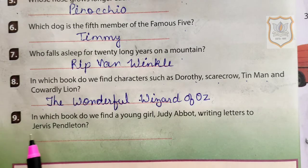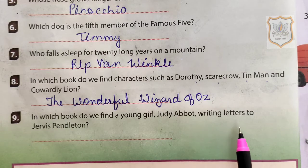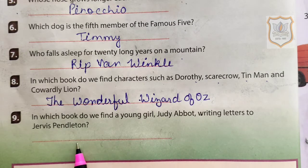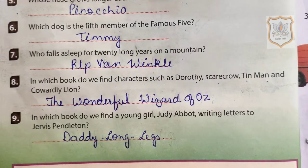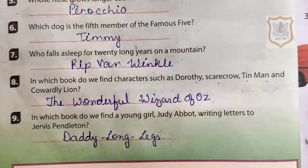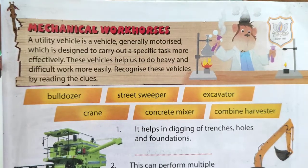Ninth and last one: in which book do we find a young girl curious about writing letters to Jarvis Pendleton? The name of the book is Daddy Long Legs. Now students, we move to our next topic, Mechanical Workhorses.